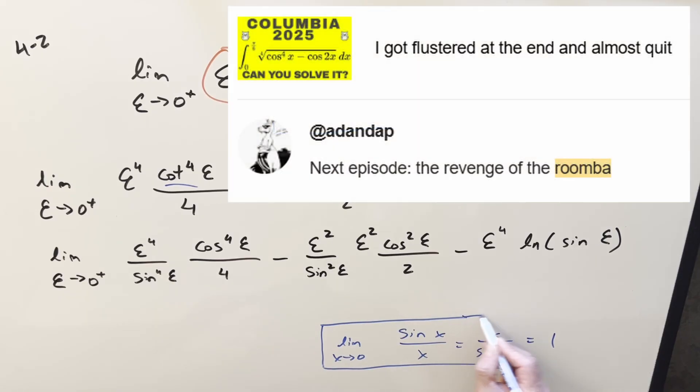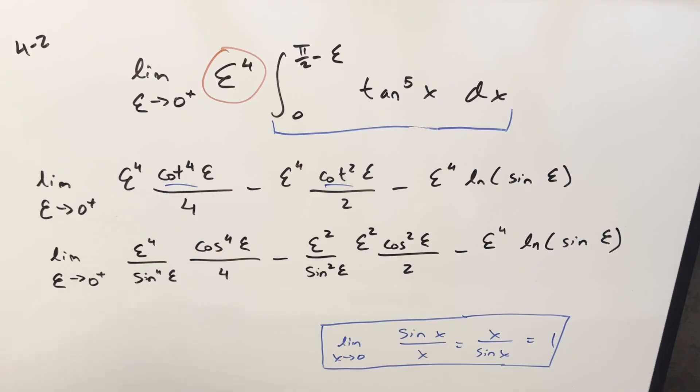When we have the limit going to zero on sine x over x or flip it, either way, it's going to be one. So this piece goes away and this piece goes away.